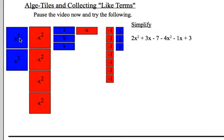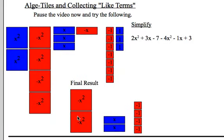And again, if I look what zero principle pairs cancel each other off, I'm left with a final result of 2 negative x squared tiles, 2 positive x tiles, and 4 negative 1 tiles. So my final result would be written this way: negative 2x squared plus 2x minus 4.